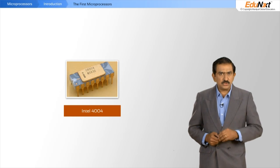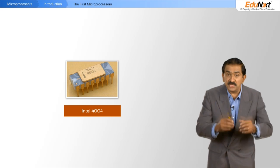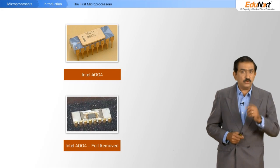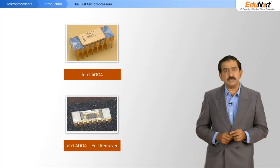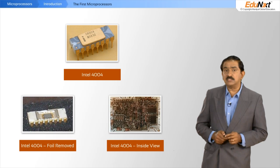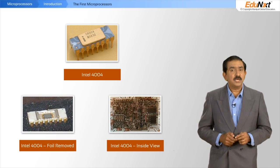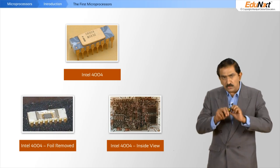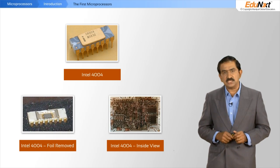The picture you see on the screen here is an actual image of the 4004. If you remove the golden foil, what you see is the picture at the bottom. And if you were to remove the heat sinks and look at it through a microscope, you would see the architecture of the 4004 with all its connecting wires, as depicted in this picture.